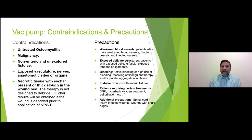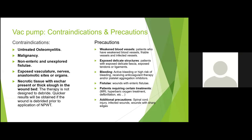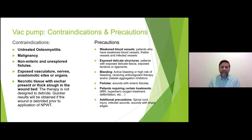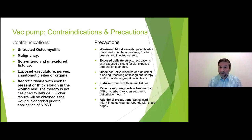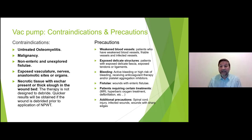When should we not use NPWT? You are applying negative pressure around tissues, so avoid it if tissues are vulnerable. Contraindications include malignancy — you are potentially spreading tumor cells — unexplored fistula, and eschar because it prevents negative pressure from working. Consider carefully with: weakened blood supply or vessels as it may cause bleeding, exposed delicate structures, active bleeding, known fistulas, and patients requiring hyperbaric oxygen or MRI.